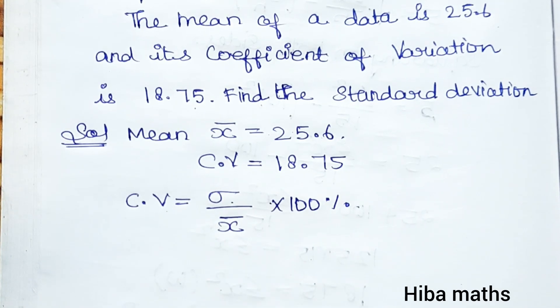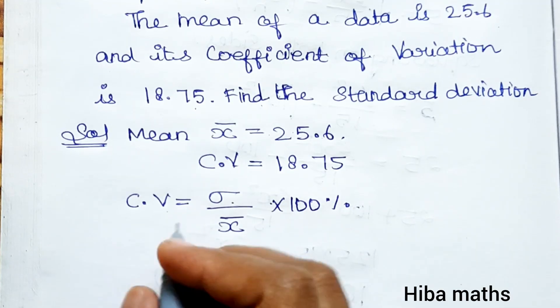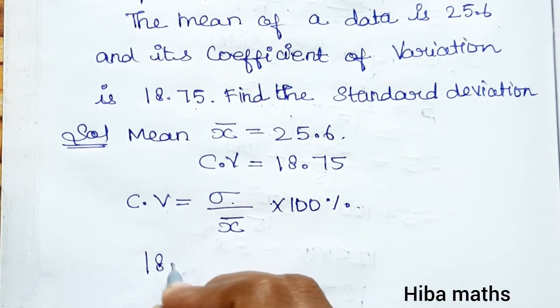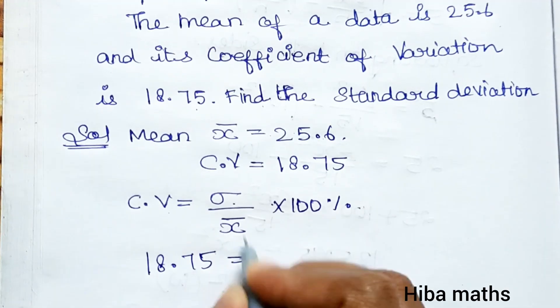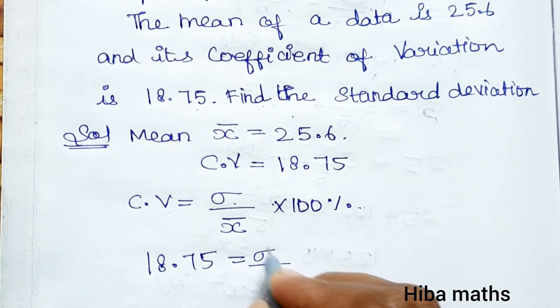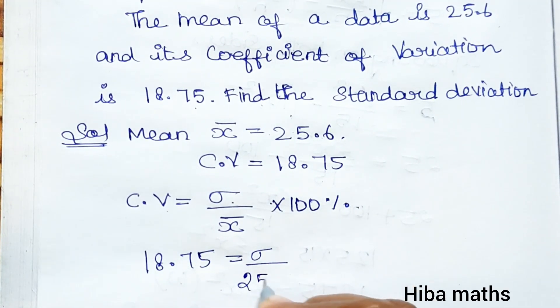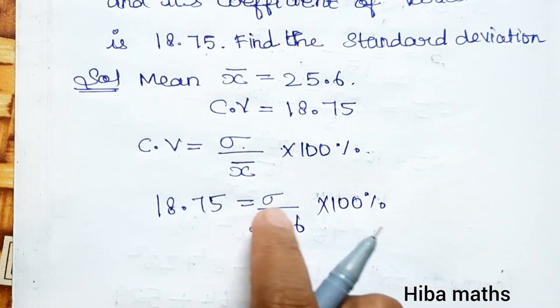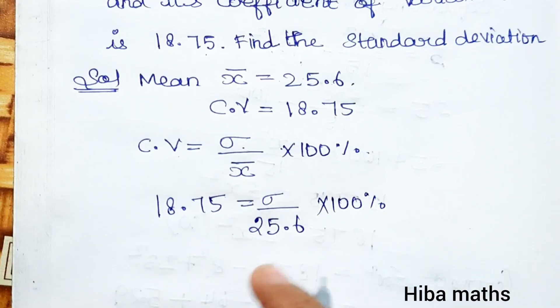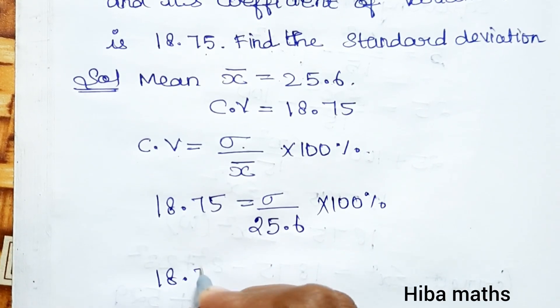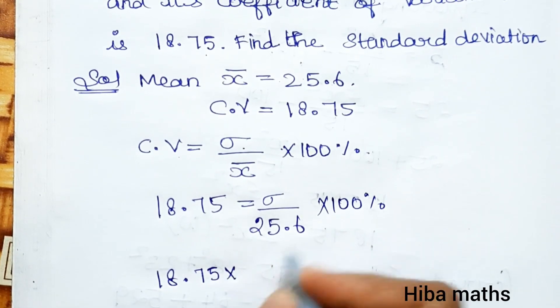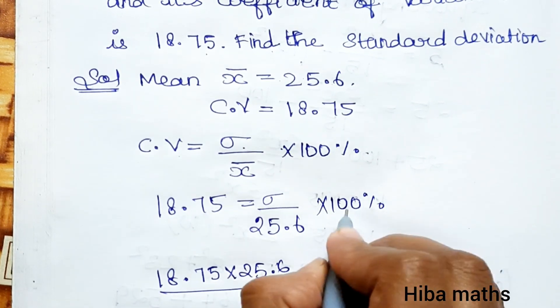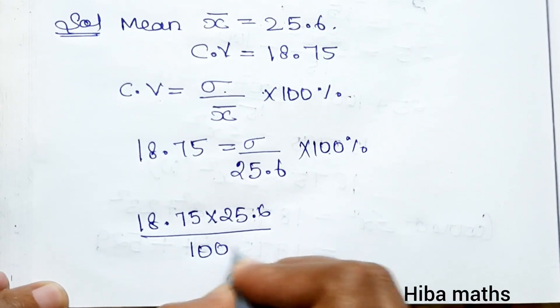We can solve this formula. So CV 18.75 is equal to standard deviation, we can solve the mean value is 25.6 into 100%.